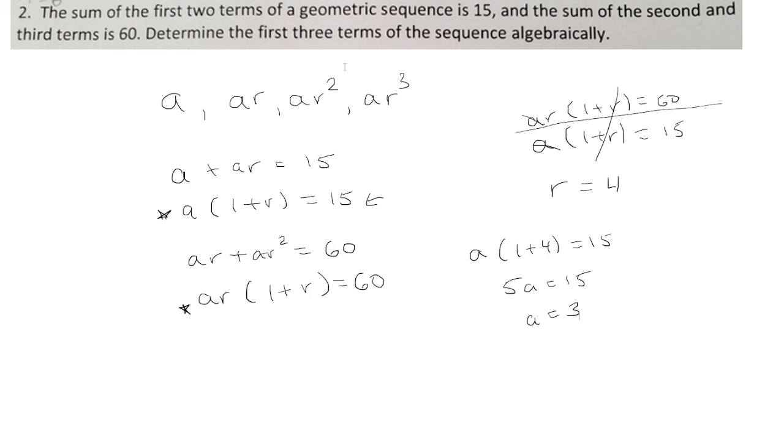Now I want to determine the first three terms of the sequence algebraically. So I'm just going to plug it in. A is 3, R is 4. 3 times 4 is 12. And now I'm just going to keep multiplying by R, which is 4. So 12 times 4 is 48. And so these are the first three terms of the geometric sequence.